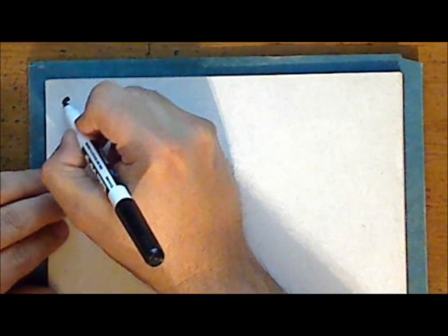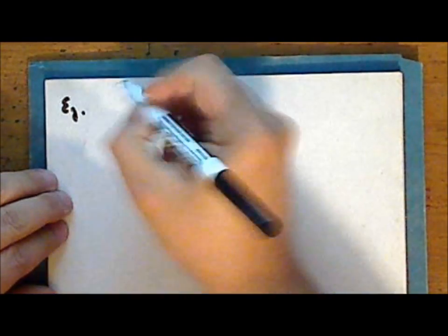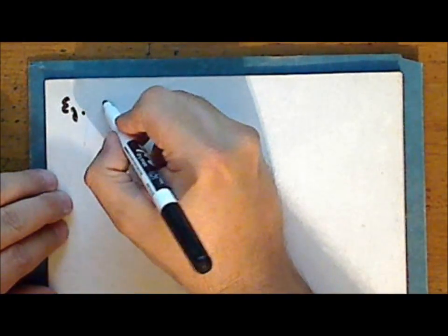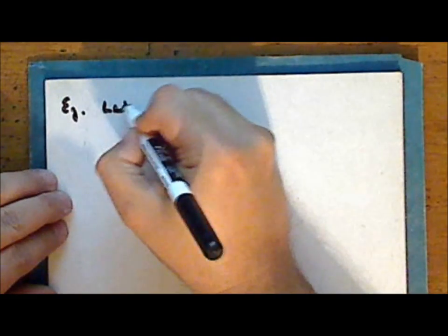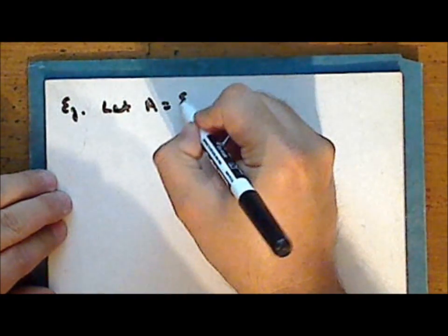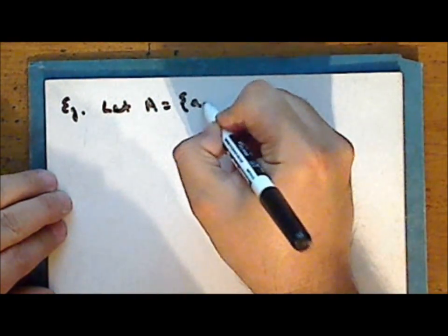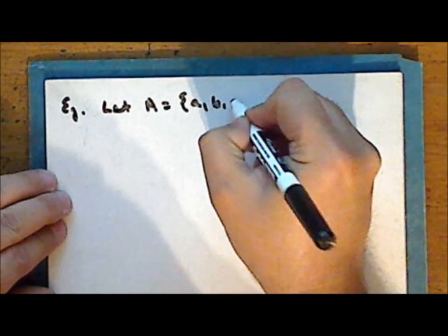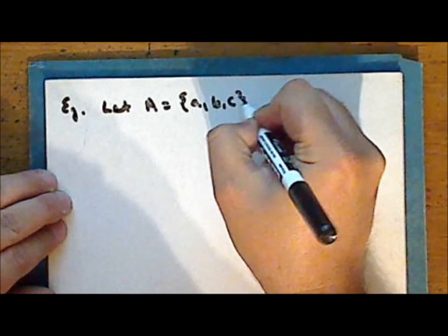Let's look at an example with a finite set. Let the set A contain the elements A, B, and C.